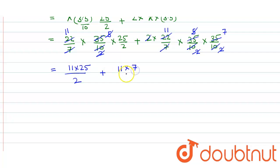So here we get 275 upon 2 plus 77 equals 137.5 plus 77, so ultimately we get the answer 214.5.